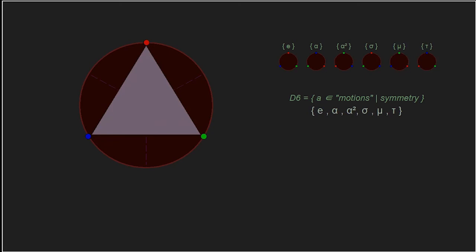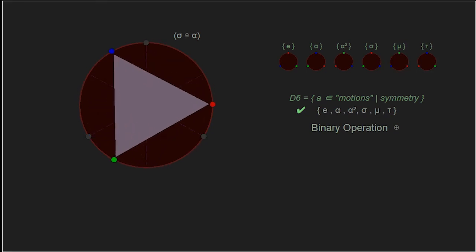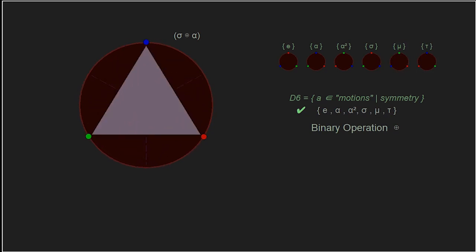Those six elements — the motions of symmetry of the triangle — are the elements we'll check to see if they form a group. Like the composition of functions, let's use the composition operation, or adding the motions together. The order of operations matters when doing composition of functions: we perform the function on the right first, then the one on the left. Our first example is alpha followed by sigma — a rotation of 120 degrees followed by the reflection about the 90-degree axis. The resulting position of the triangle is the element tau.